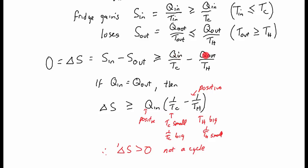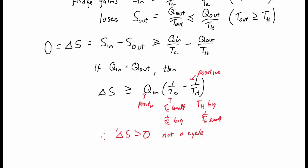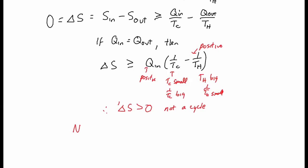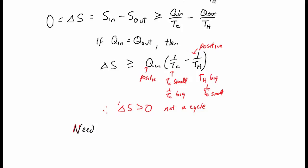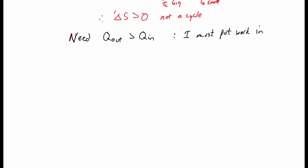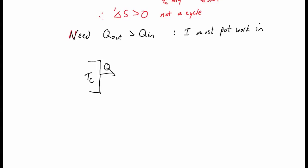What do we need then? If we want delta S to be zero, we need more heat to flow out than flows in. Where does that extra energy come from? I can't provide it as heat because I've already taken care of that — it must be provided as work. So I need Q_out to be greater than Q_in, which means I must put work into the fridge.